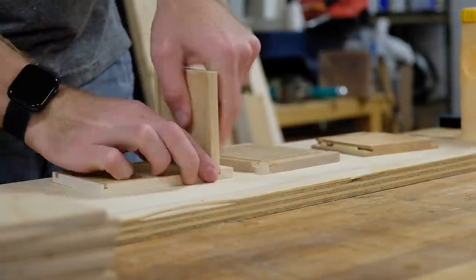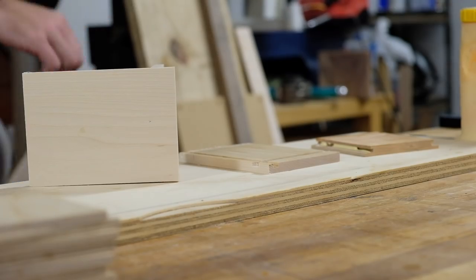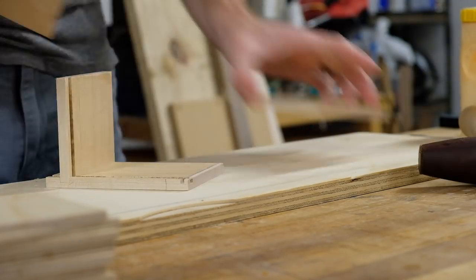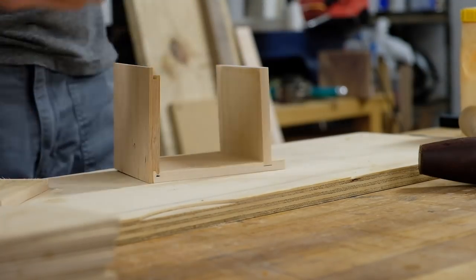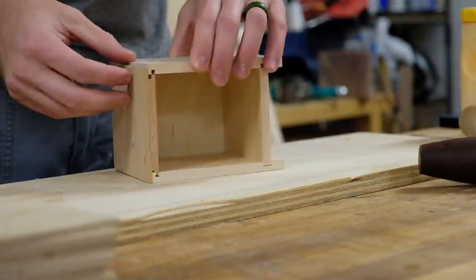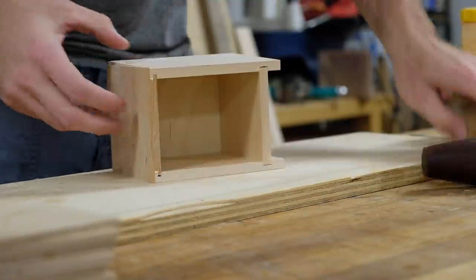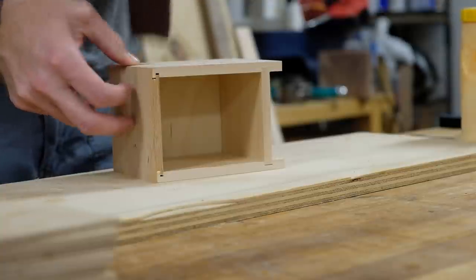The rest of the drawer parts and joinery are pretty straightforward. Each part receives a quarter inch groove to hold the plywood bottom. The back of the sides receive a dado to house the drawer back. I gave the inside faces a coat of shellac before gluing them up.